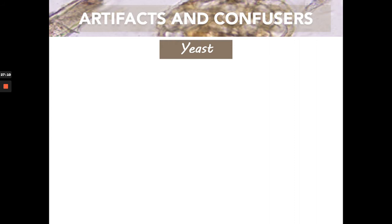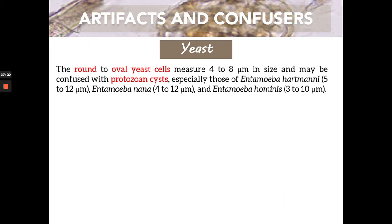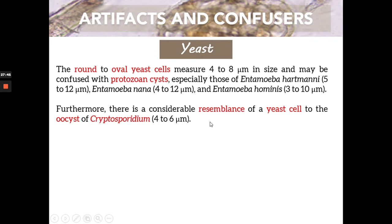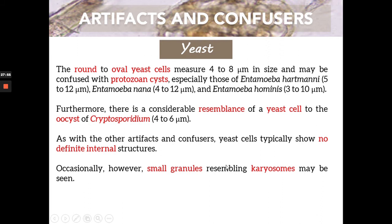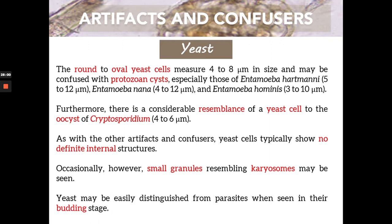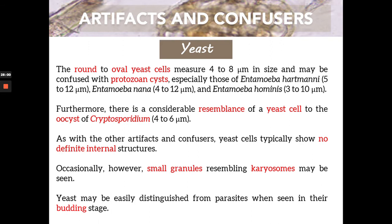Next, yeast cells are another type of microorganism — a type of fungi. Because of their appearance, oval yeast cells can be mistaken as protozoan cysts. The size of your yeast is closely similar to the size of Entamoeba hartmanni, Entamoeba nana, and even Entamoeba hominis. A yeast cell can also resemble the oocyst of Cryptosporidium, as sizes are very close at 4 to 8 micrometers.